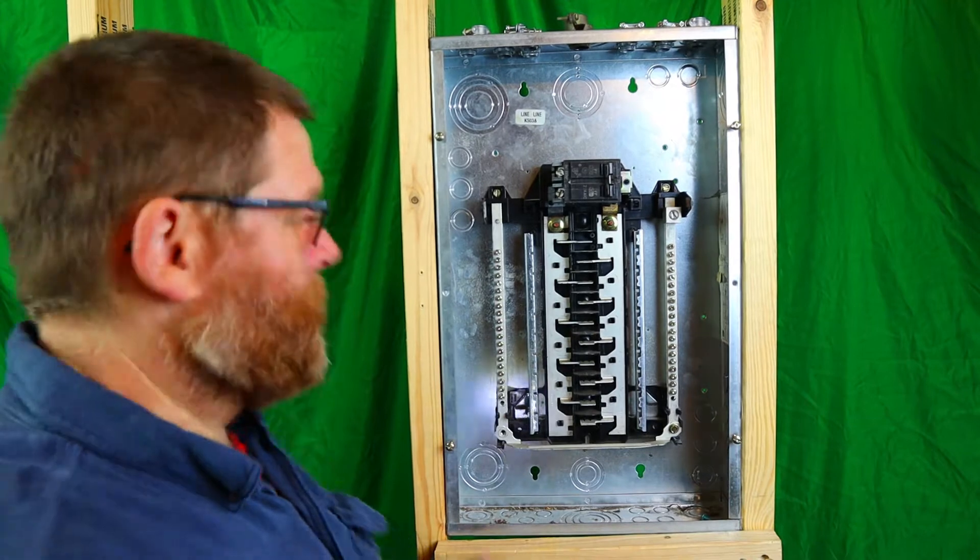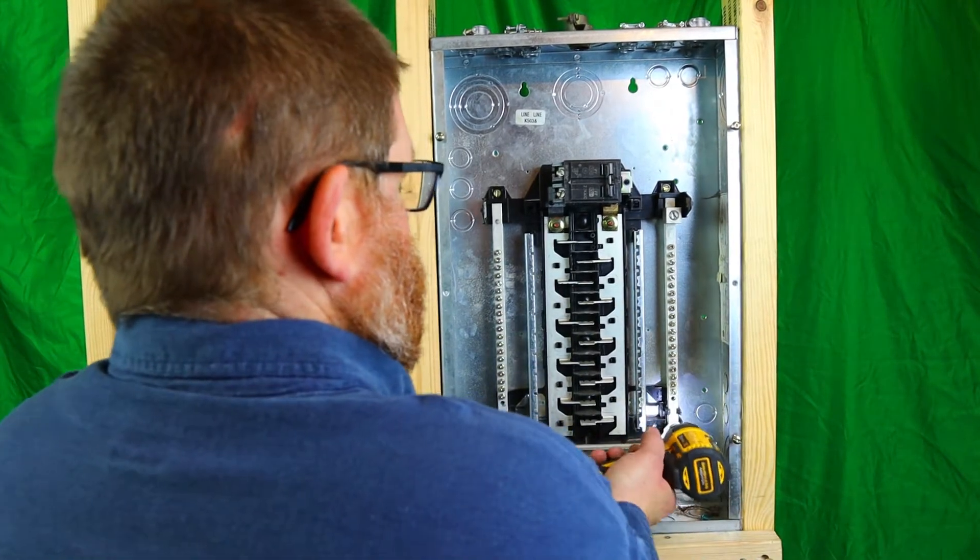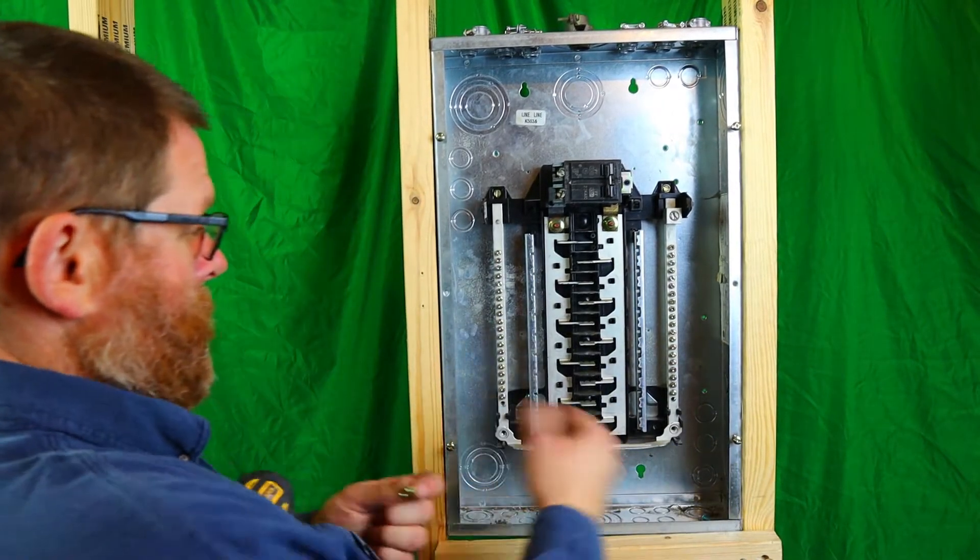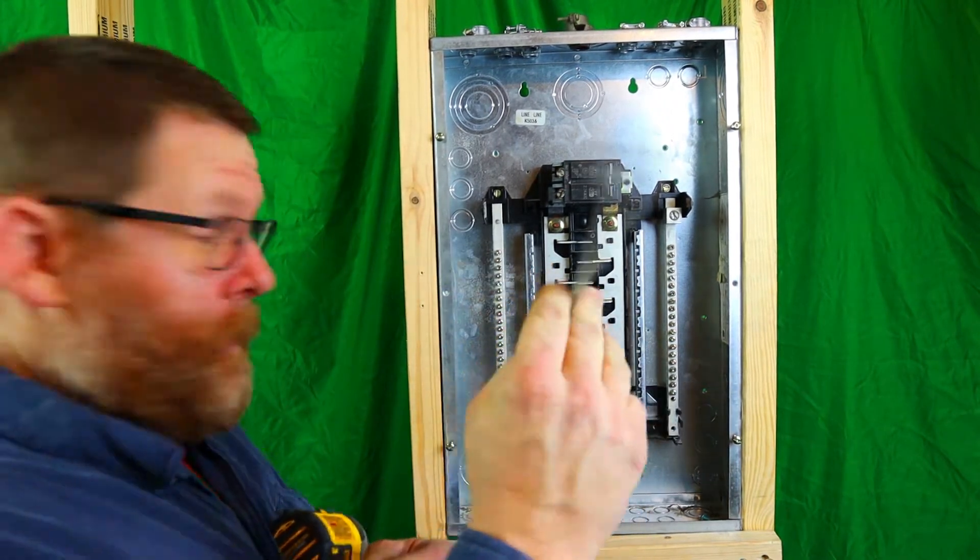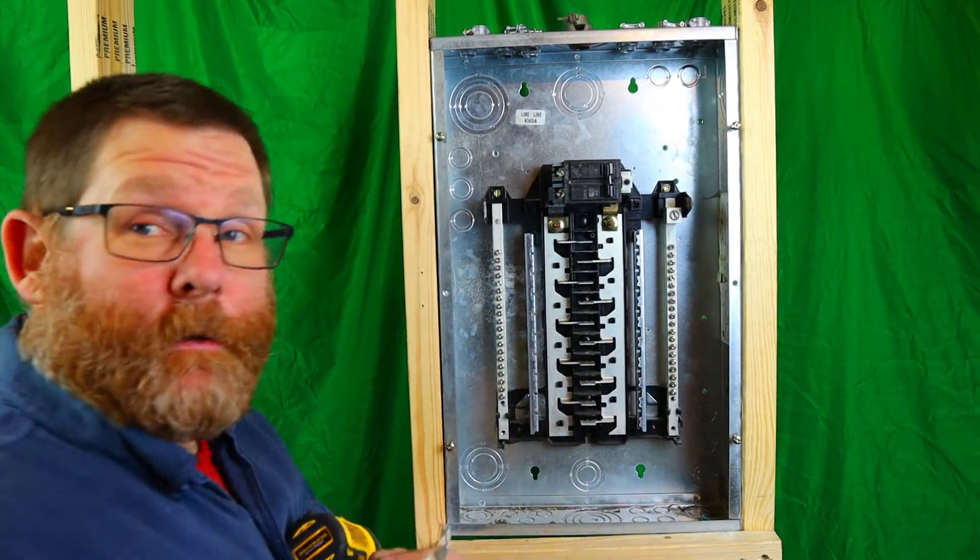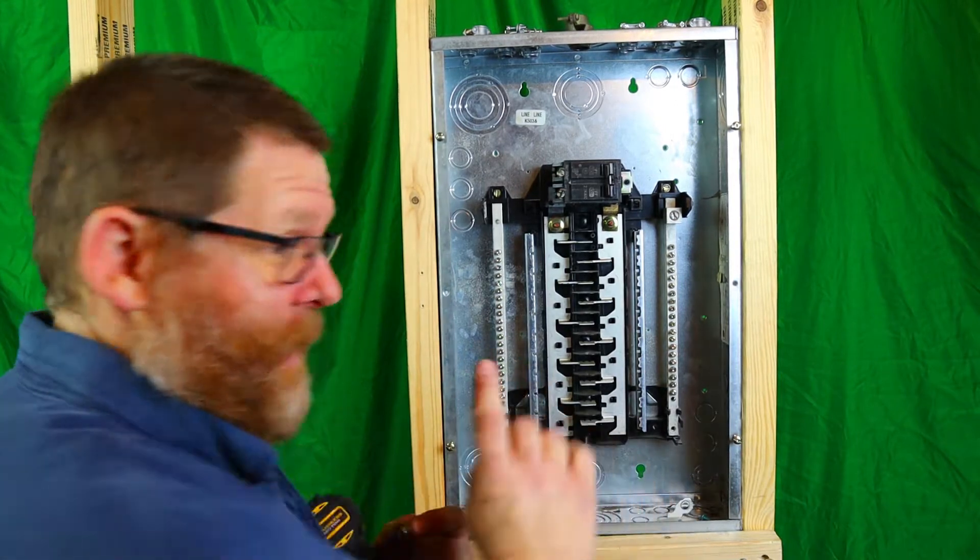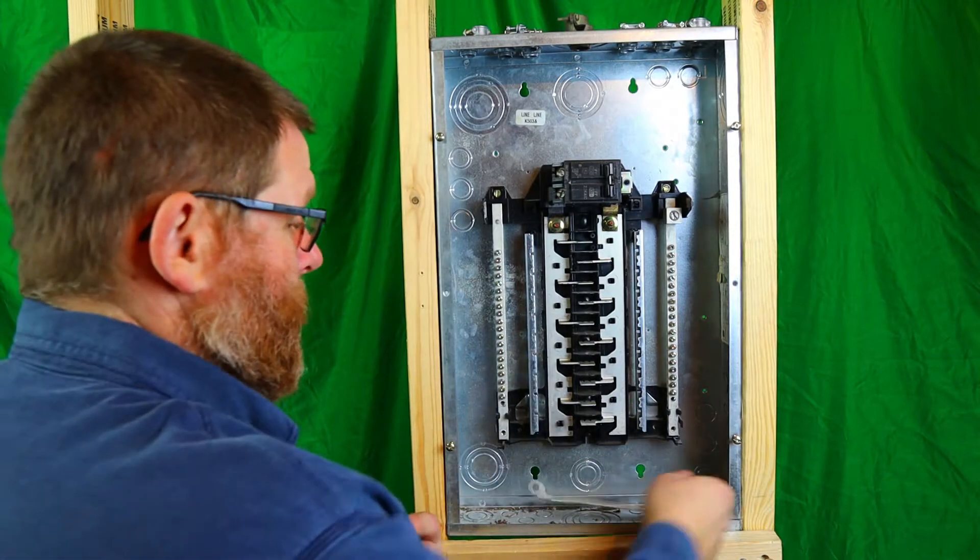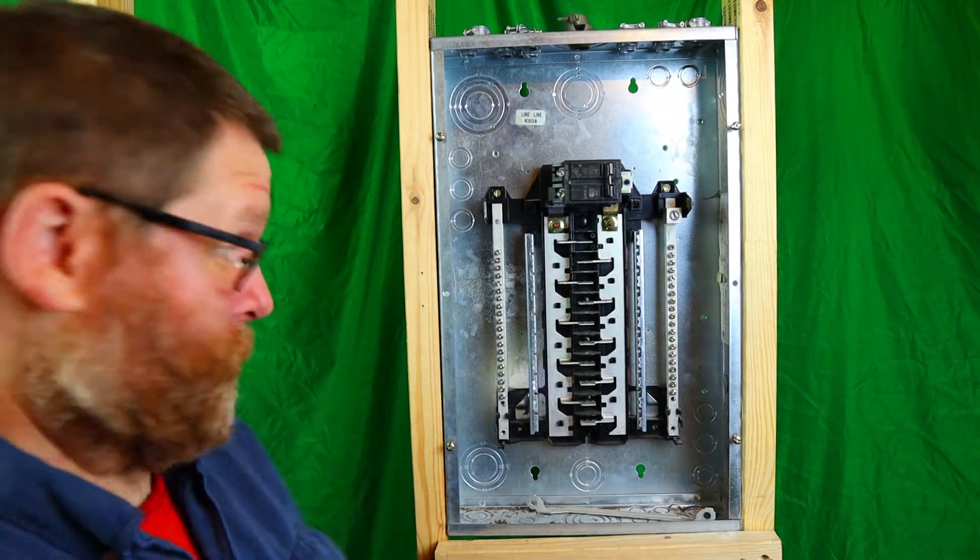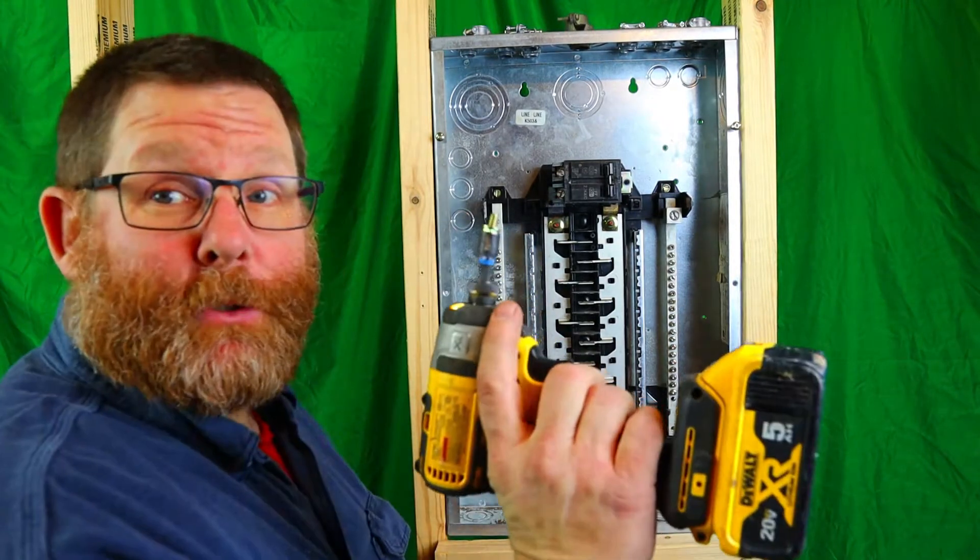Now these are three-eighths screws - I'm going to use an impact, take it off. Excuse me, they're three-eighths bolts. We're going to take the bar off. Now they're separated. That is very important. Do not throw this bar away at all, because one day you may have to use this panel for something else. You want to put the screws back in.